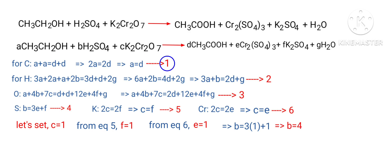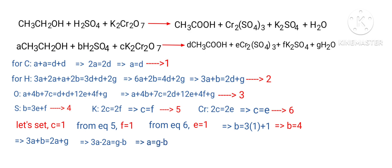From Equation 1, A equals D, so substitute D equals A into Equation 2: 3A plus B equals 2A plus G, which gives A equals G minus B. Applying B equals 4 gives: A equals G minus 4. (Equation 8)